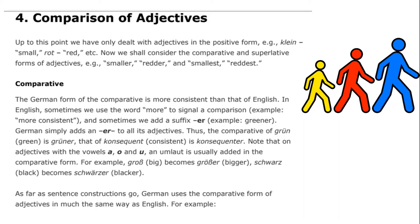We can finally move on from conjunctions to comparisons. Up to this point the textbook tells us we have dealt with adjectives only in the positive form — talking about that which is small as "klein," that which is red as "rot," etc. Now we consider the possibility of using certain linguistic capabilities within German to talk about things which are more of that quality than others — comparing small to smaller, red to redder, and even to the winner of the whole contest: smallest, reddest, etc.